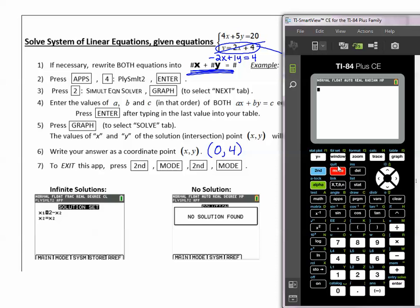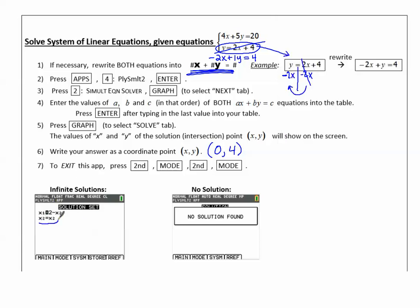Now, if our screen looks like this, where these are equal, that means infinite solutions. If we have no solutions, it will say, no solution found.